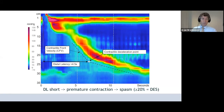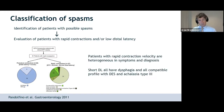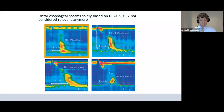In contrast to previous versions of the Chicago classification, we no longer consider contractile front velocity to be relevant. This follows from a study by Tom Pandolfino, where patients with rapid contraction velocity formed a heterogeneous group in symptoms and diagnosis, while those with a short distal latency all had a compatible profile with DES and achalasia type 3. So distal esophageal spasm is now solely based on distal latency. Looking at four examples, only the one in the upper left corner — with a distal latency of less than four and a half seconds — qualifies as spasm.